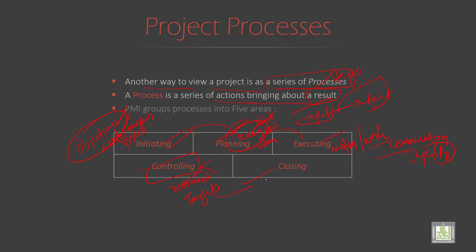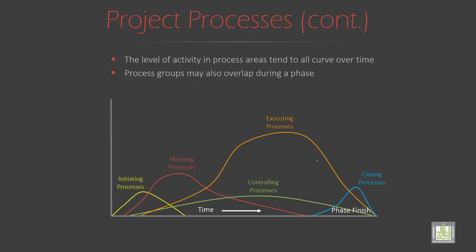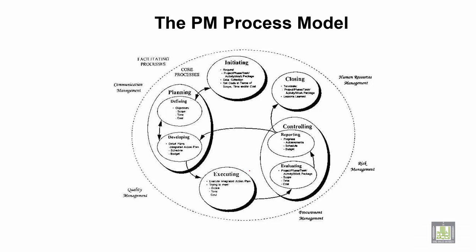Closing is the final stage where you get the result. In graphical representation, the stages are: initiating, planning, executing, controlling, and closure. The level of activity tends to curve over time, and process groups may overlap during each phase.